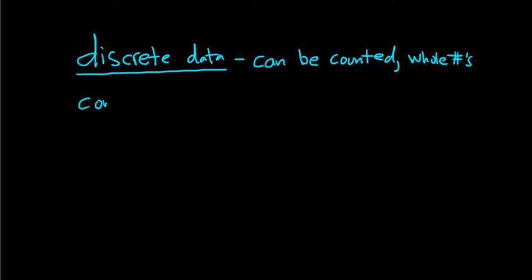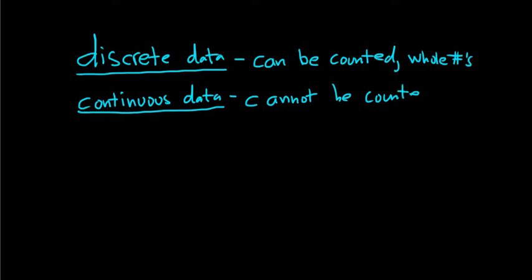The other type of data is called continuous data. So continuous data, the actual definition is it cannot be counted. And it actually takes on any value in a line interval. That's the idea.